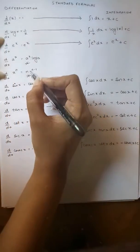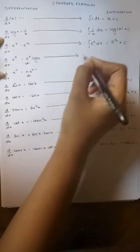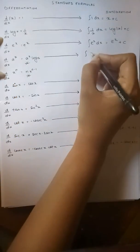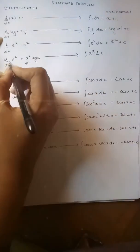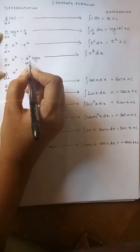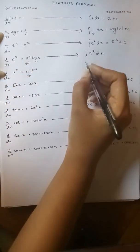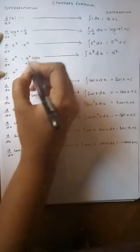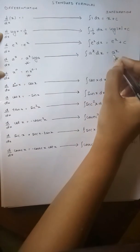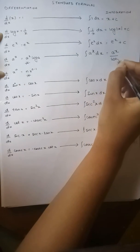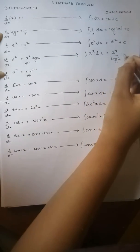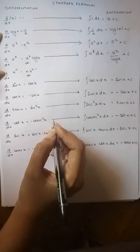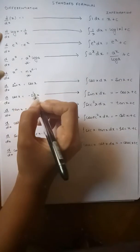I had skipped these two formulas — you will understand why. Instead of integrating the answer, I am integrating the question again. Differentiation of a raised to x gives me a raised to x times log a. Similarly, integration of a raised to x with respect to x: in the differentiation answer, log a was multiplied, so in the integration answer log a gets divided. So a raised to x upon log a plus c is the answer for integration of a raised to x.